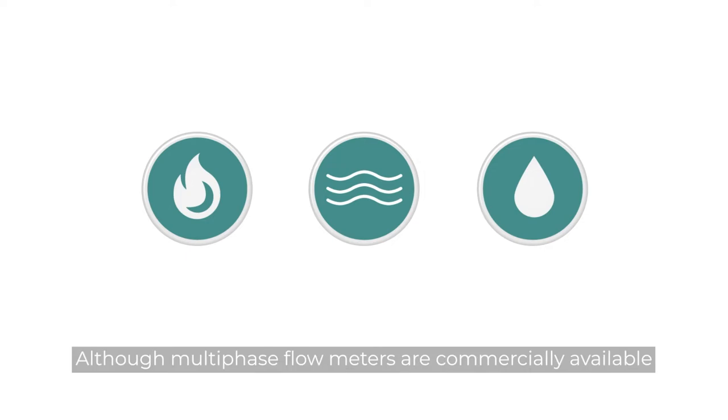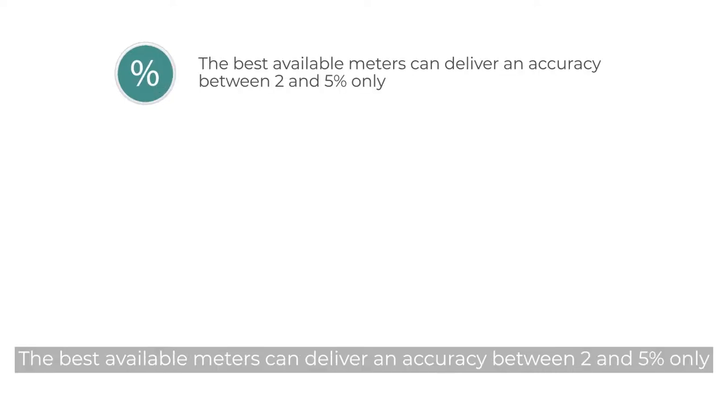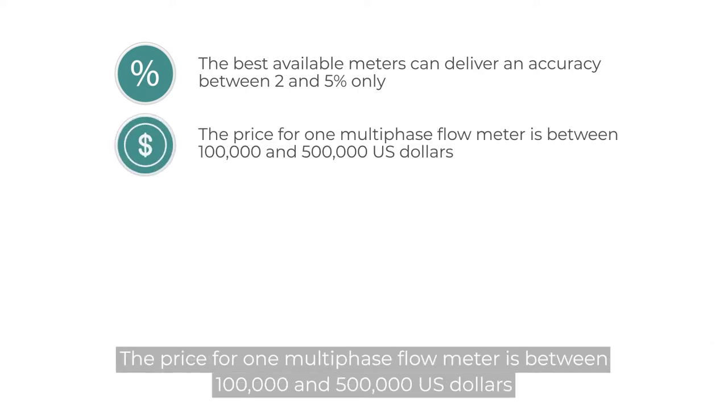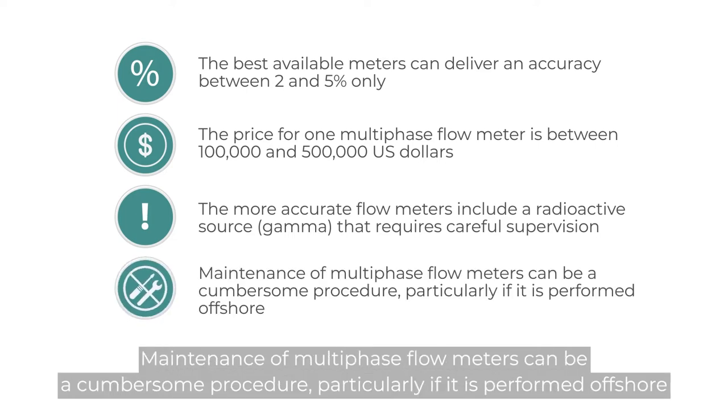Although multi-phase flow meters are commercially available, most pipelines are not equipped with them due to various reasons. For example, the best available meters can deliver an accuracy between 2% and 5% only. The price for one multi-phase flow meter is between $100,000 and $500,000. The more accurate flow meters include a radioactive gamma source that requires careful supervision. Maintenance can be cumbersome, particularly offshore.